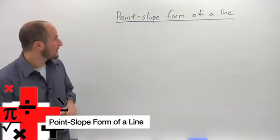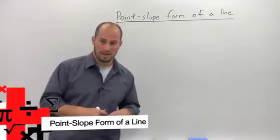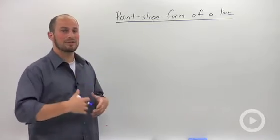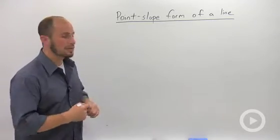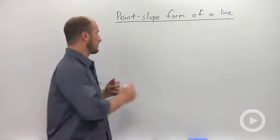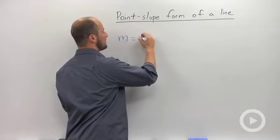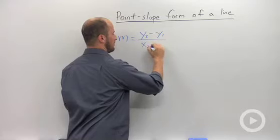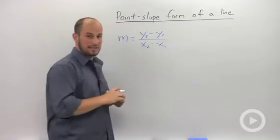Point-slope form of a line is my personal favorite. The reason why is it's a really easy way for me to remember how to write the equation of a line. It all starts with the slope equation, which, if you remember, is m equals change of y's over change of x's.